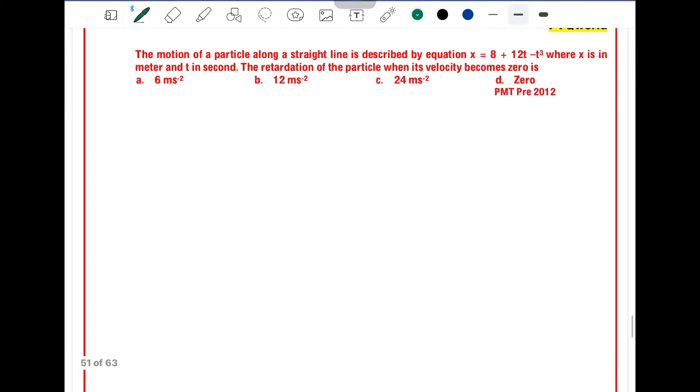The motion of a particle along a straight line is described by the equation x = 8 + 12t - t³ where x is in meters and t in seconds. The retardation of the particle when its velocity becomes zero is: